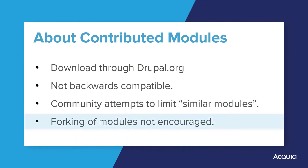Although you could fork the code of an existing module, that's generally frowned upon for multiple reasons. Community-provided updates to the source module will not automatically be applied to your forked module, and occasionally those updates are security-related. Also, forking could confuse potential users and goes against the spirit of collaboration in open source. Those are some of the reasons why the community attempts to limit the availability of similar modules.